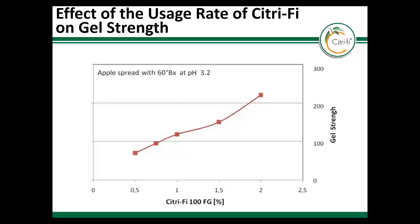As expected, targeted gel strength can be reached by adjusting the Citrify usage level. My recommendation is to start with 1 to 1.5%. Always, the natural pectin content of your fruit source needs to be considered, since this also affects the system.